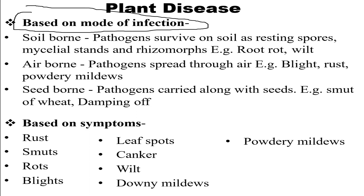Next, based on the mode of infection, there are three main types: soilborne, airborne, and seedborne. Soilborne pathogens survive in soil as resting spores, mycelium strands, and rhizomorphs — such as root rot and wilt. Airborne diseases spread through air and include blight, rust, and powdery mildew. Seedborne pathogens are carried along with the seed, such as smut of wheat and damping off.